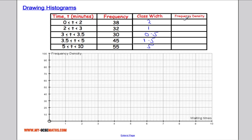So frequency divided by class width gives me 19, 19, 32, 30 divided by 0.5 is 60 and 45 divided by 1.5 is 30, 55 divided by 5 is 11. So now what we're going to do is we're going to draw our histogram using the frequency density and the times.